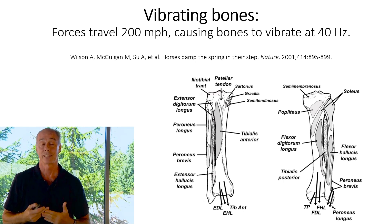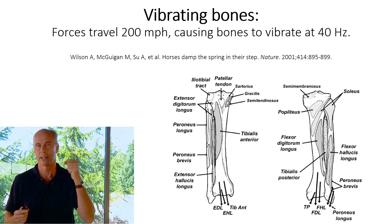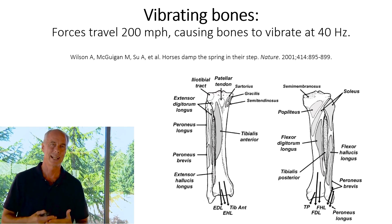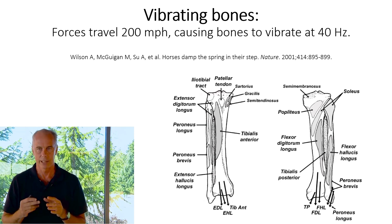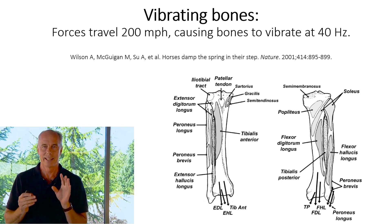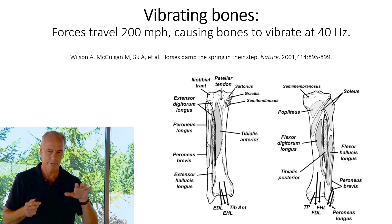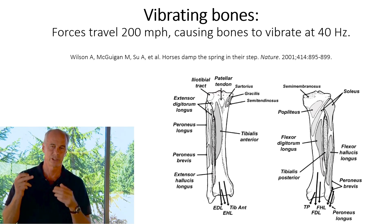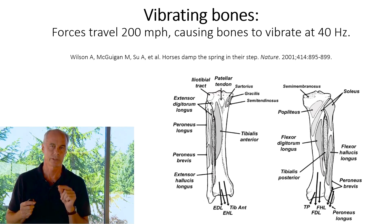Muscles don't just accelerate and decelerate — dampening oscillations is huge in injury prevention. A group of researchers took athletes and had them run on different surfaces from extremely hard to extremely soft, measuring muscle activity to identify which muscles dampened vibration. They showed that when you transition to a hard surface — which your body accommodates within a single step — there's a change in the long head of the biceps femoris and the lateral head of the gastrocnemius. Those two muscles are key for absorbing shock in humans, and different strengthening protocols and plyometric drills that increase tone in those muscles are really important for dampening vibrations.